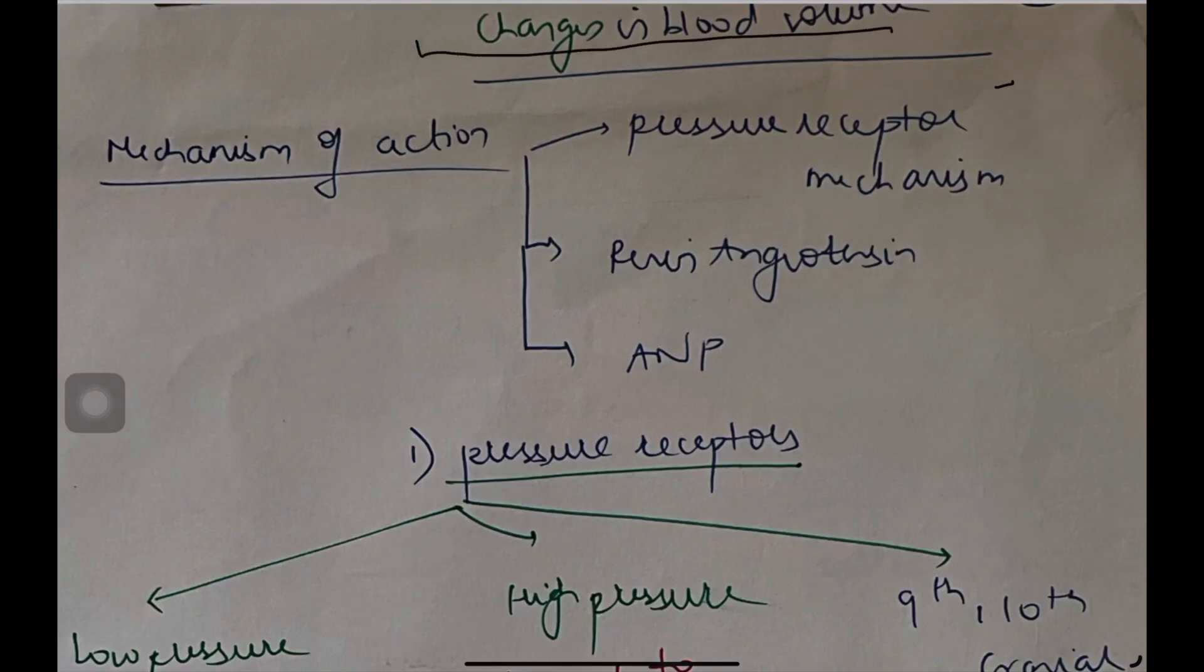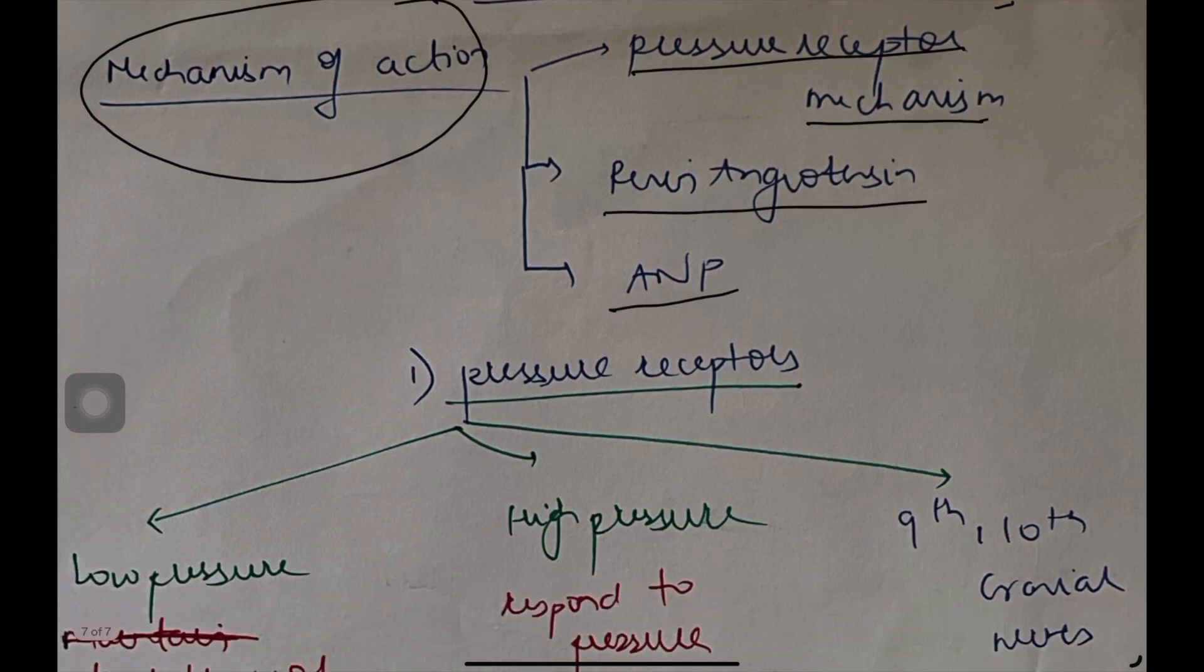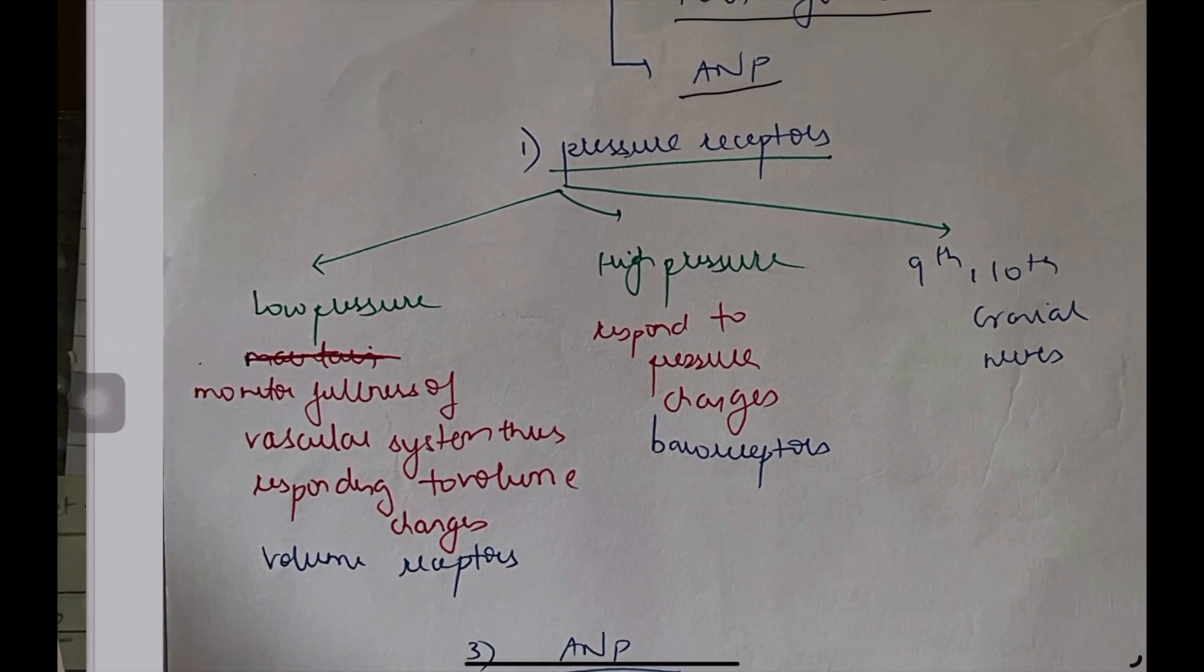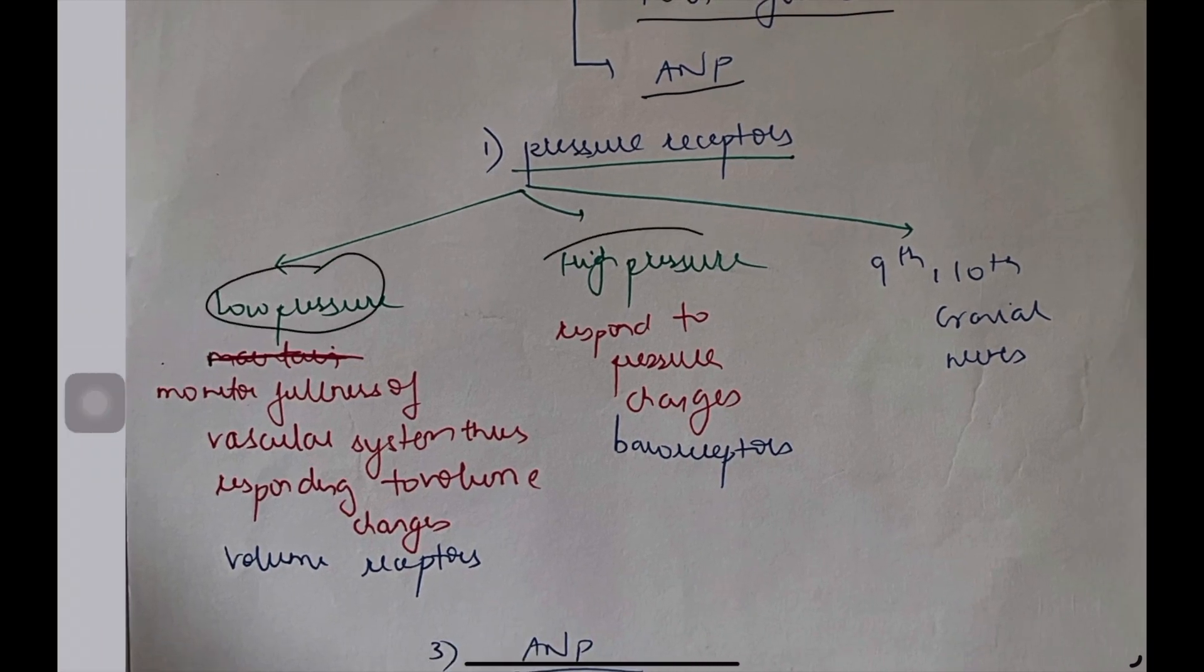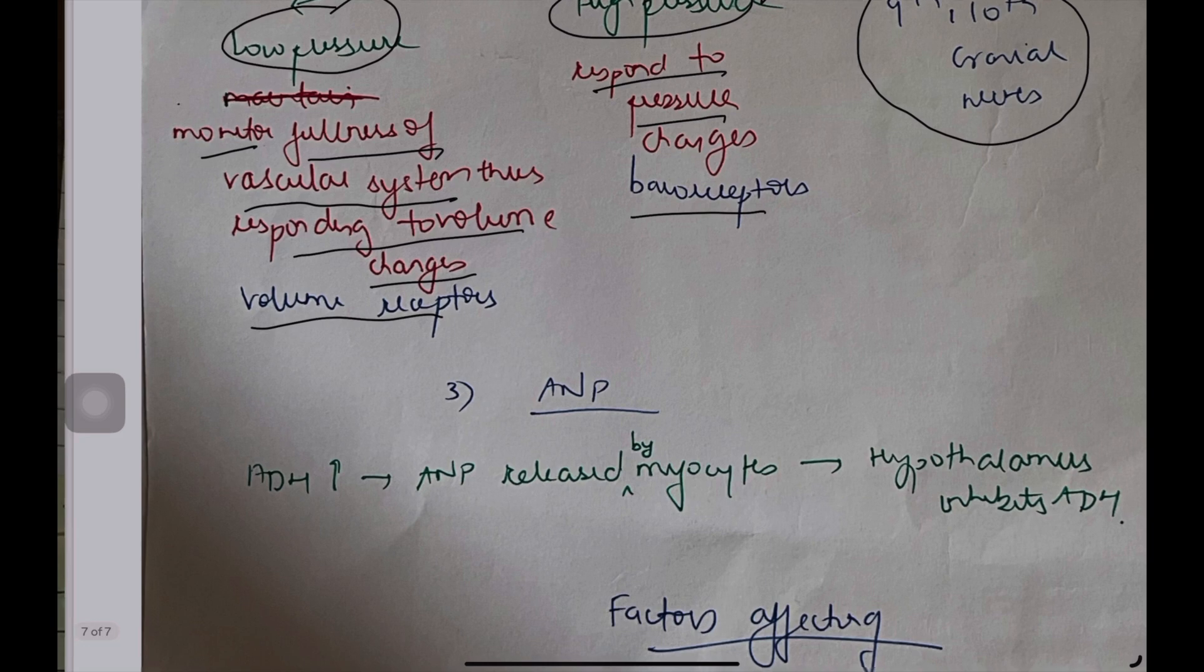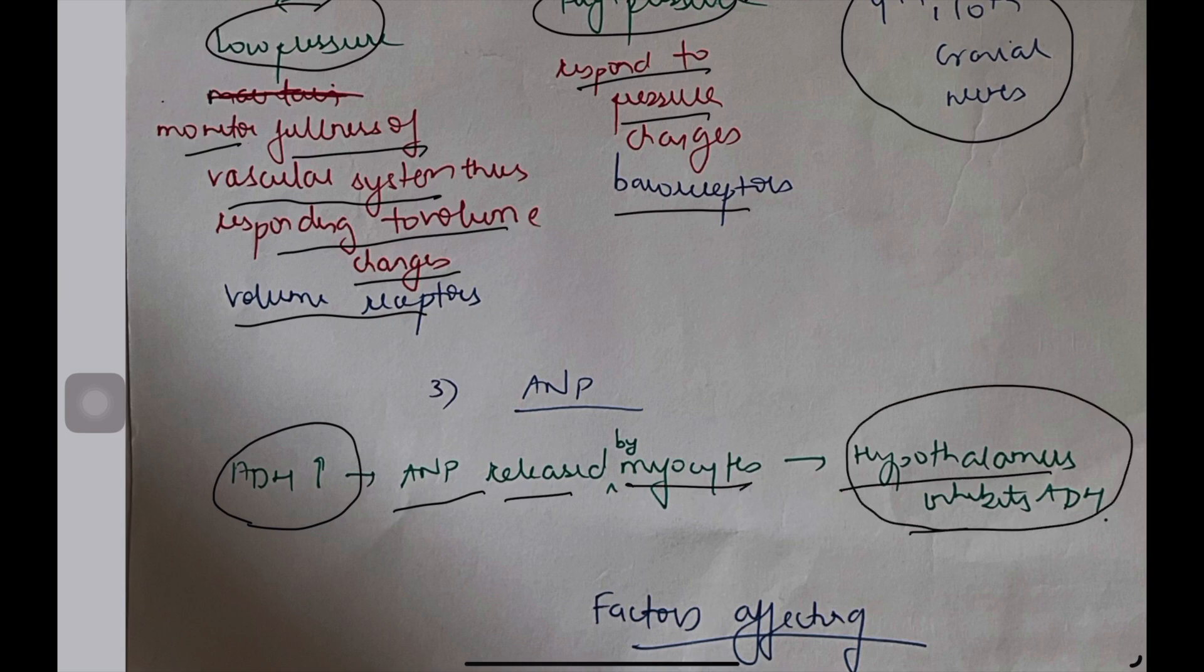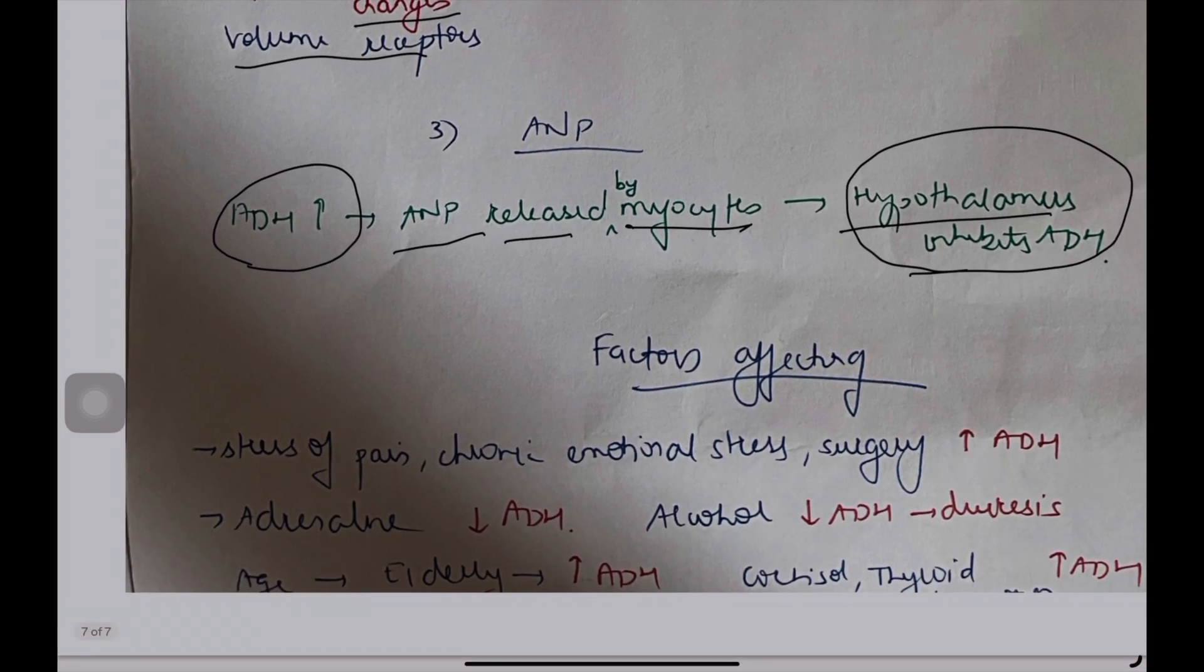Regulation part 2: changes in blood volume. What is the mechanism of action here? There are 3: pressure receptor mechanism, renin angiotensin, and ANP, atrial natriuretic peptide. We will start with the pressure receptors. You have low pressure receptors, you have high pressure, and then you have 9th and 10th cranial nerves. Low pressure receptors monitor fullness of vascular system, thus responding to volume changes, volume receptors. High pressure respond to pressure changes, baroreceptors. Next, ANP. ADH increase causes ANP release by myocytes. The hypothalamus then inhibits ADH. This is a kind of negative feedback.